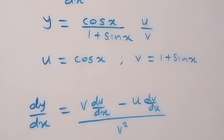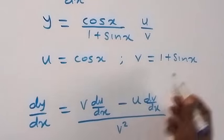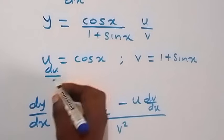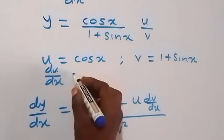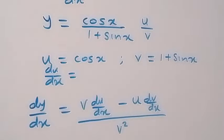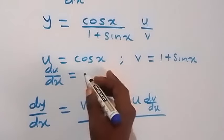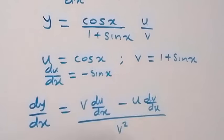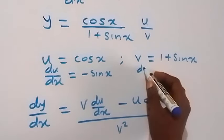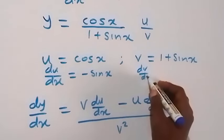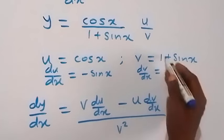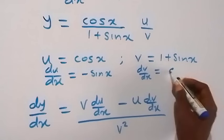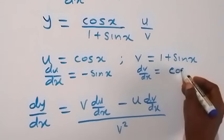Now let's find du/dx. The derivative of cos x is minus sin x. And we have dv/dx here. Derivative of 1 is 0, derivative of sin x is cos x.